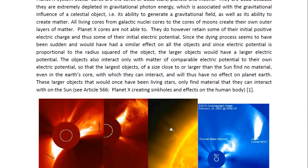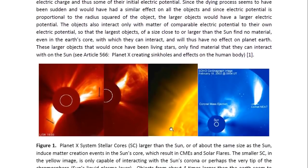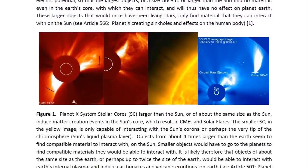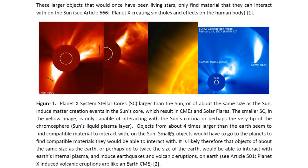These larger objects that would once have been living stars only find material they can interact with on the Sun. You may look at Article 566 entitled Planet X Creating Sinkholes and Effects on the Human Body for more details. Here you can see some of these objects — this is a very large one, this one about the same size as the Sun, this one smaller. Planet X system stellar cores larger than or about the same size as the Sun induced matter creation events in the Sun's core. These result in CMEs and solar flares, and this is what you see here occurring — there's a CME going out towards the object, a huge CME going out towards this huge object.